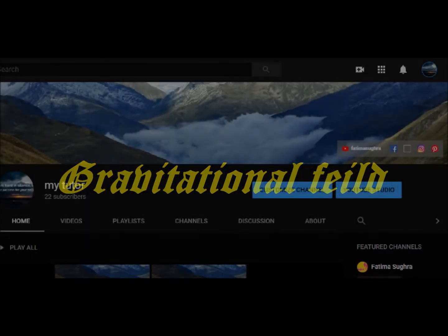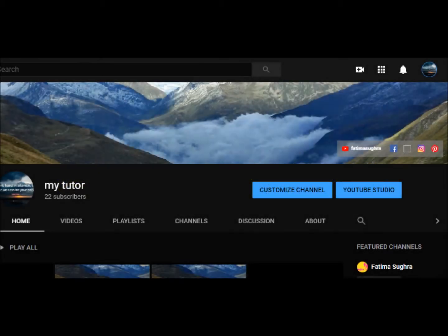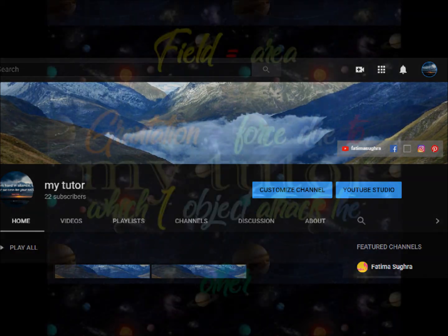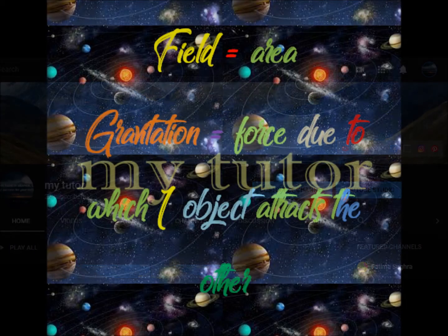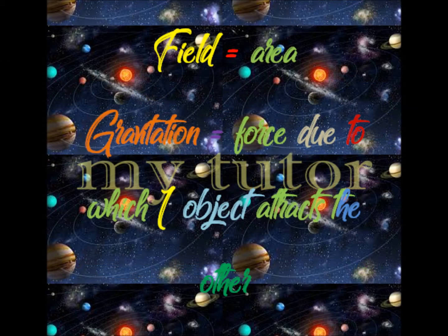Bismillahirrahmanirrahim, Assalamualaikum. Today our topic is 5.2 Gravitational Field. First of all, let's see what is a field. A field is an area — a specific region. And gravitation is a force due to which every object in the universe attracts every other object.